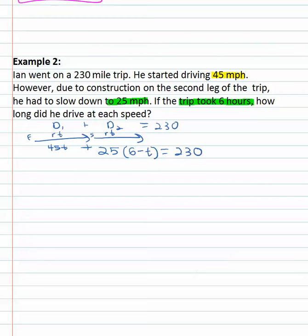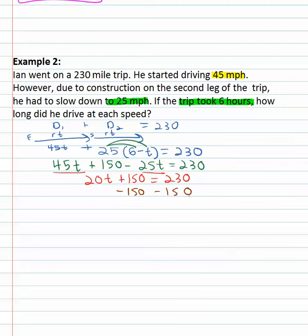We now have an equation we can solve by adding the distances together. We'll distribute the 25 and we get 45t plus 150 minus 25t equals 230. We can combine the like terms. 45 minus 25 is 20t plus 150 equals 230. It's a two-step equation. We'll subtract 150 from both sides, and 20t equals 80. Divide both sides by 20, and time is 4 hours.